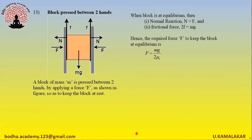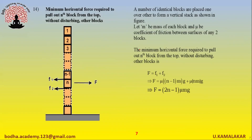A block of mass m is pressed between two hands by applying force F, so that the block is kept at rest. The force required to keep the block at equilibrium is given as: F equals mg divided by 2mu_s.